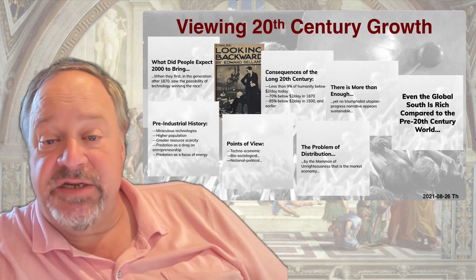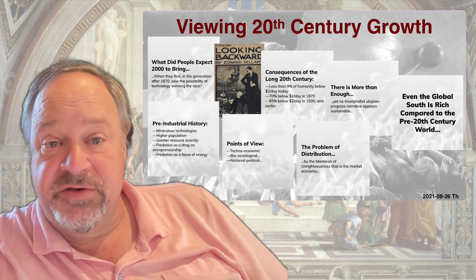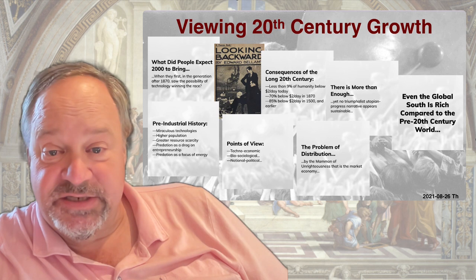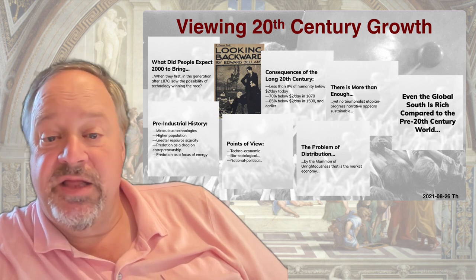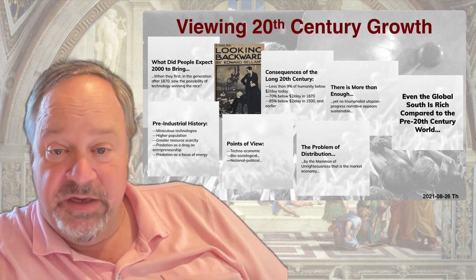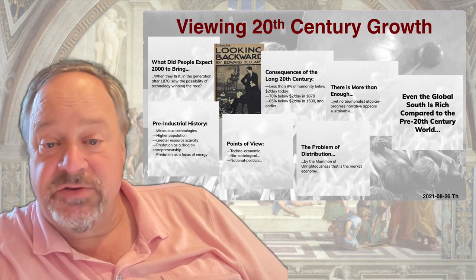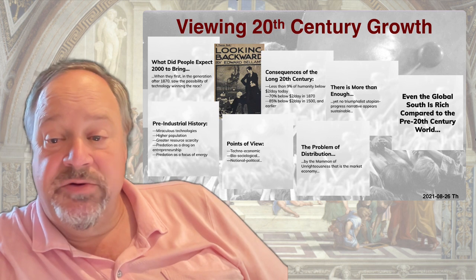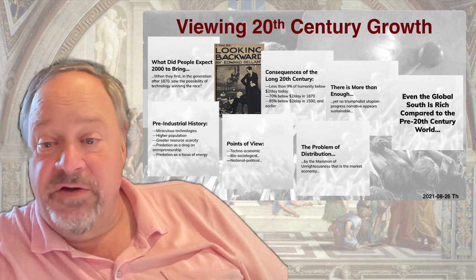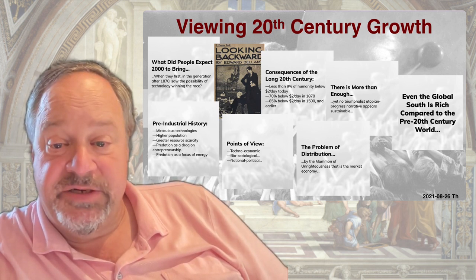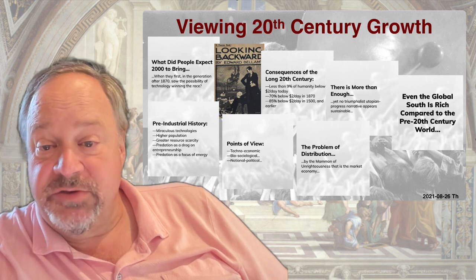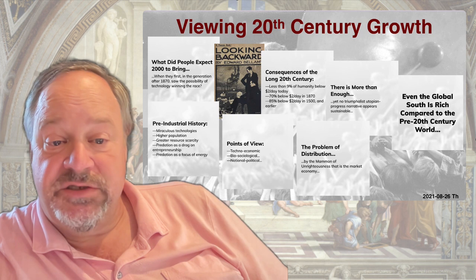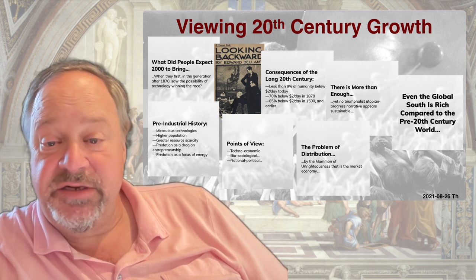70% of humanity lived below $900 per year in dire poverty — below $2.50 a day in 1870. Less than 9% lives below $2.50 a day today. Today, there is more than enough. Even the global South is very rich compared to the pre-20th century world. And yet no triumphalist utopian progress narrative appears to be sustainable. We have not taken our technological power and managed to build a utopia.